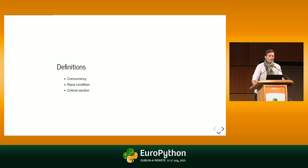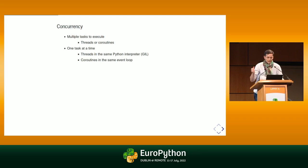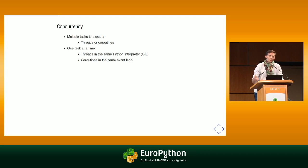Concurrency is basically the concept of interleaving multiple tasks on one processing unit. Each task gets executed for a short period of time before moving on to another task, and so on until all tasks complete. In Python, while the global interpreter lock is still a thing, basically all threads executed in one Python process will run concurrently — so it is something you have every time you use threads.